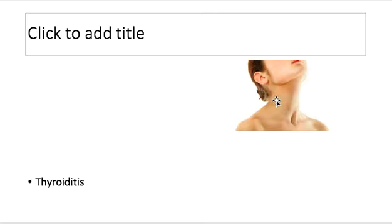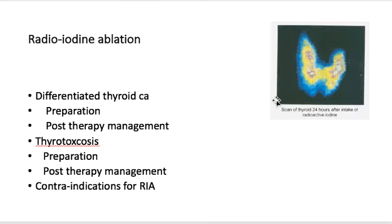A few words about radio-iodine ablation. It's used in two situations. First, in differentiated thyroid cancer after surgery, after total thyroidectomy, you do radio-iodine ablation to ablate any residual tissue in the thyroid bed and also any mets.